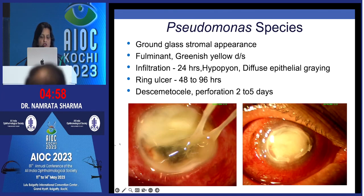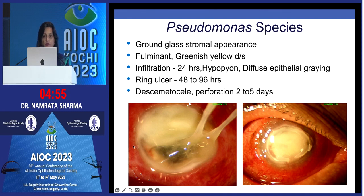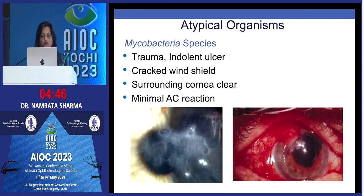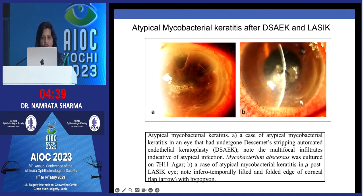Pseudomonas will have greenish discharge with hypopyon, diffuse epithelial graying, ring ulcer in 48 to 96 hours, and descemetocele or perforation in 2 to 5 days. Mycobacteria has a cracked windshield-like appearance with a clear surrounding cornea and hardly any anterior chamber reaction.